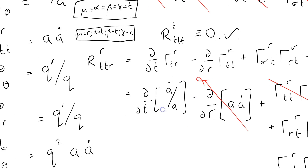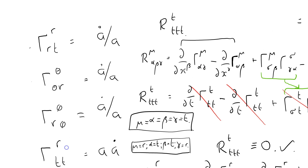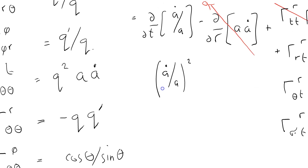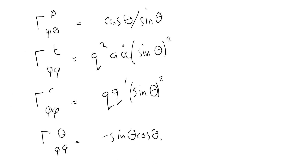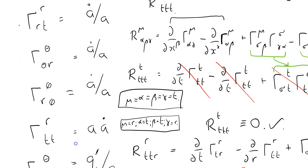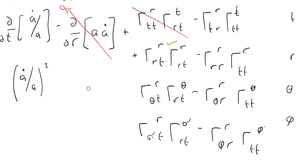Christoffel(R, R, T) - let me go back and check. Yes, I have it - it's A-dot over A. So this term here is (A-dot over A) squared. Tick that one. What about Christoffel(R, theta, T)? R at the top - nope, that's a zero term. So let's cross that one out.